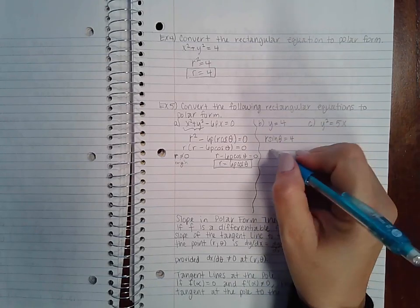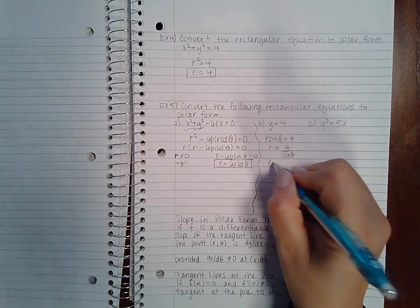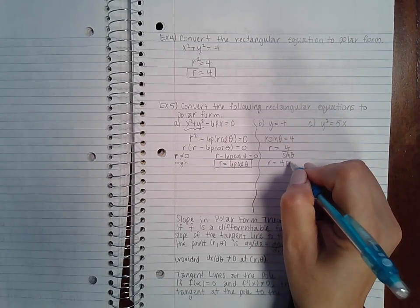So you divide both sides by sine, and then just remember that one over sine is cosecant theta.